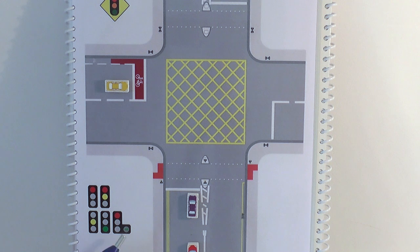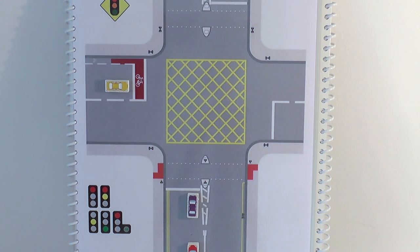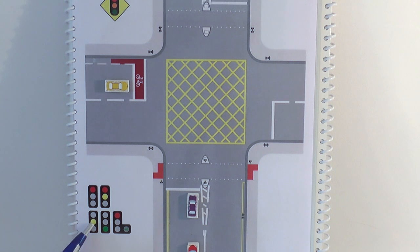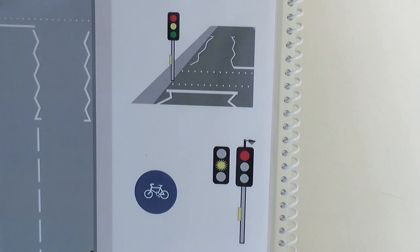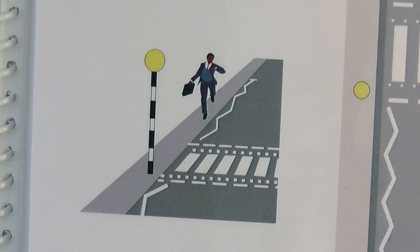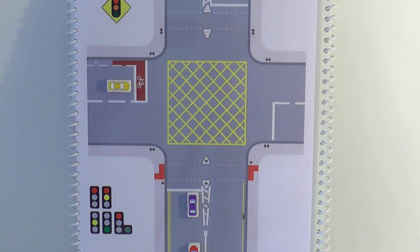A green arrow light means you can go in that direction provided it's safe to do so. If the arrow light is flashing amber, that means you can go in the direction the arrow is pointing, provided there's no traffic on the adjoining road or the other road up ahead. If you have a flashing amber circle light — flashing on and off every second or two — that means you can proceed but you must be aware and give way to pedestrians who are crossing or about to cross.